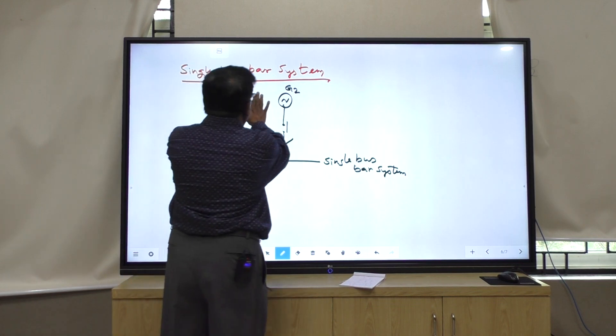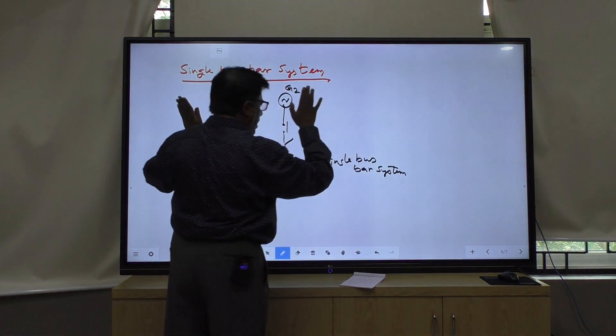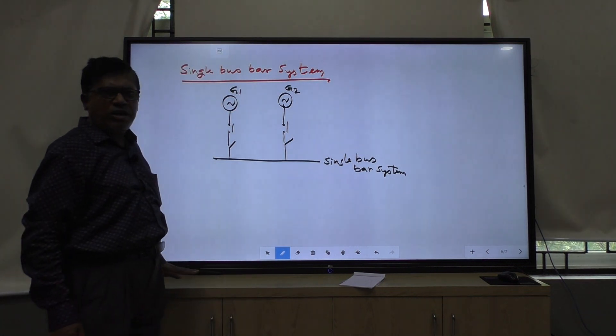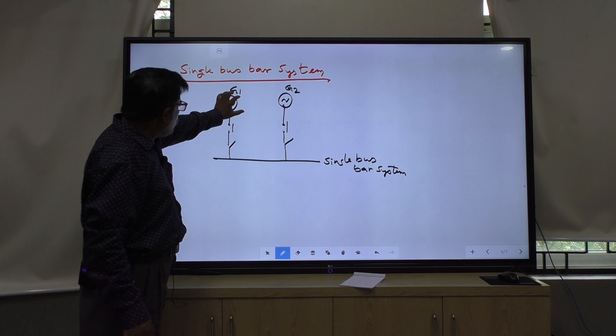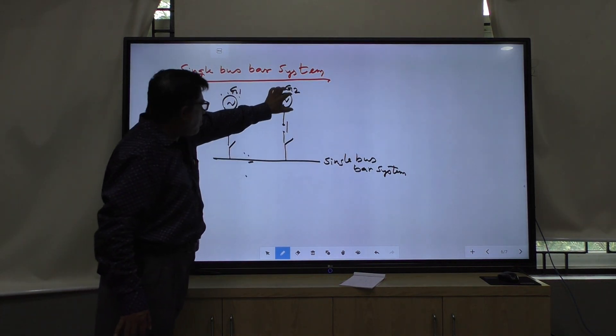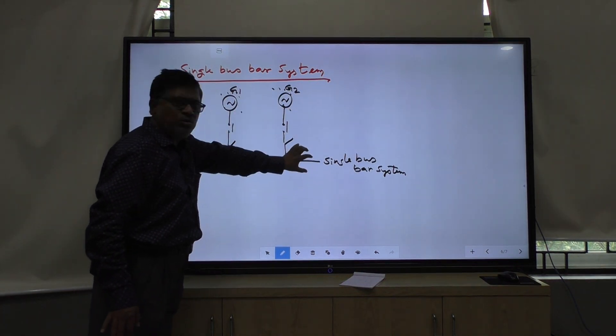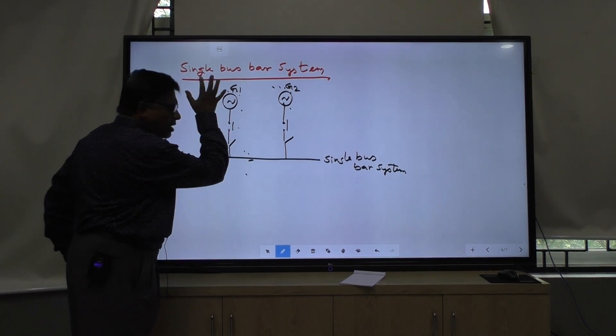But all the generators are interconnected to a common bus bar. That is, we are calling single bus bar system. This is your circuit breaker and isolator.